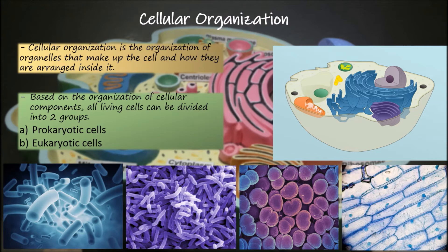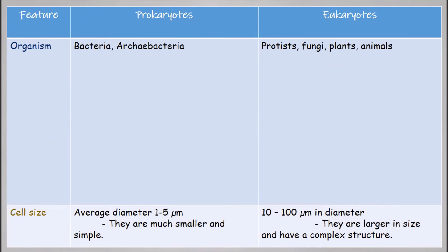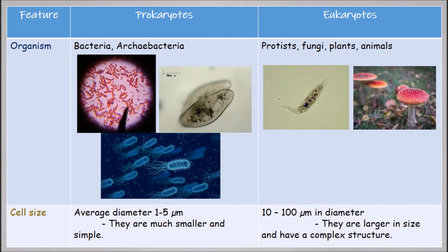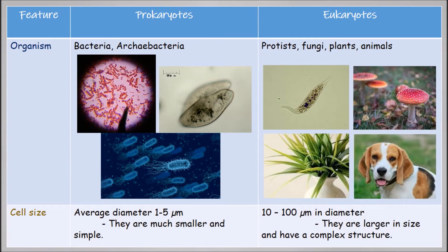Prokaryotes include bacteria and archaea, while eukaryotes include protists, fungi, plants, and animals. In terms of cell size, the average diameter of a prokaryotic cell is about 1 to 5 micrometers. They are much smaller and simpler and have a large surface-to-volume ratio, meaning nutrients and waste products can be exchanged rapidly between the cell and its surroundings.